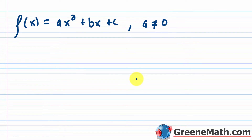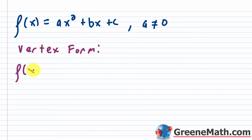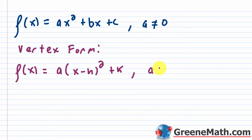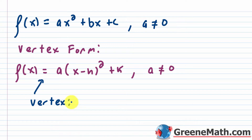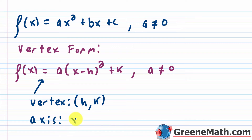We're going to go into the vertex form, where f of x is equal to a times the quantity x minus h squared plus k. Again, a is not equal to zero. If we have it in this form, we immediately know the vertex occurs at h comma k, and the axis of symmetry would occur at x equals h.